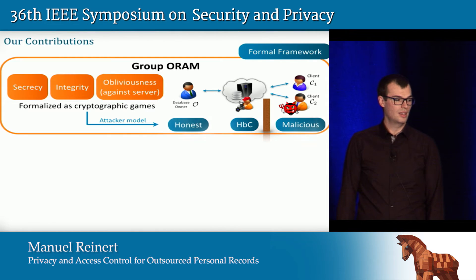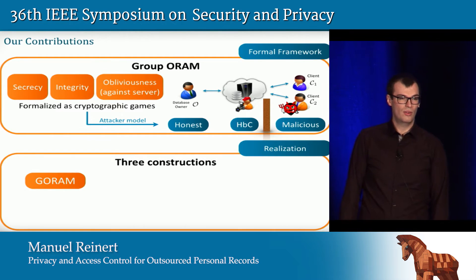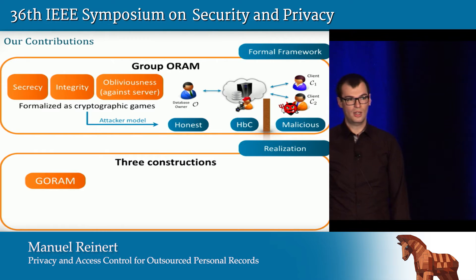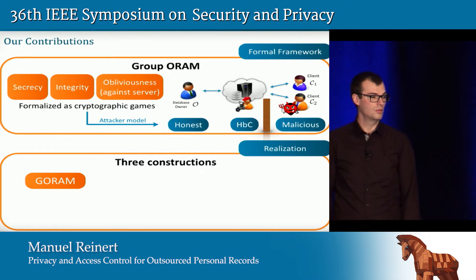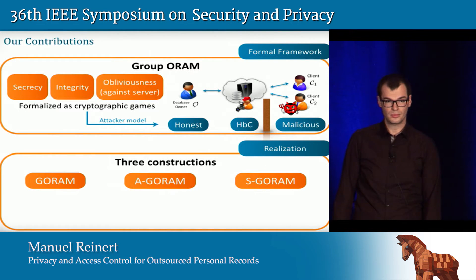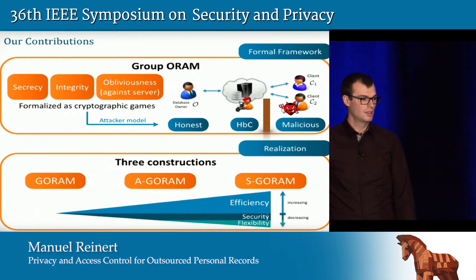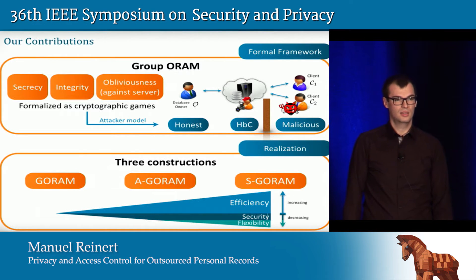We have one more restriction, namely that the server should not be able to collaborate or collude with clients. In addition to this formal framework, we also present three different constructions ranging from a generic one — Go-RAM — a more efficient one — Accountable Go-RAM — and an even more efficient one — Scalable Go-RAM. They are more efficient as we go from left to right, but we have to slightly relax security and flexibility to achieve this efficiency. Today I'm going to focus on this lower part of the story.